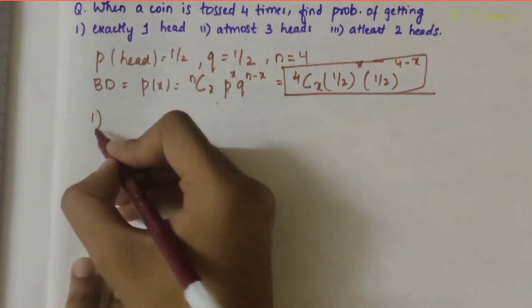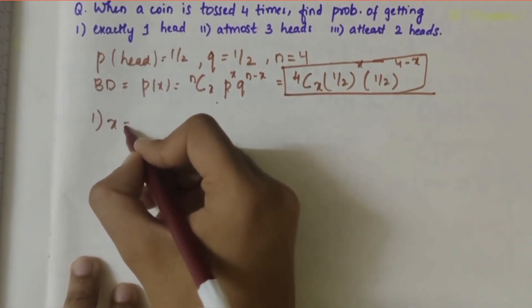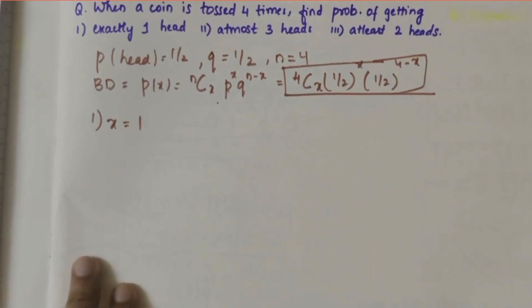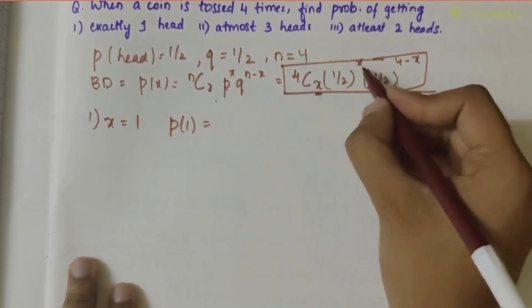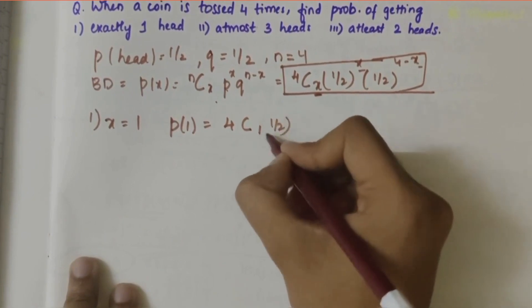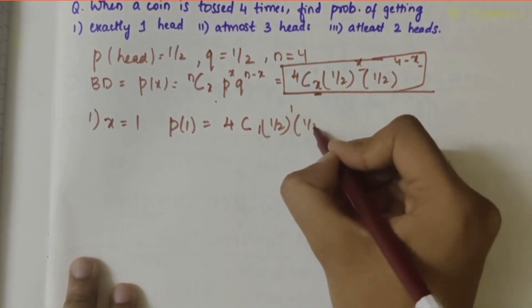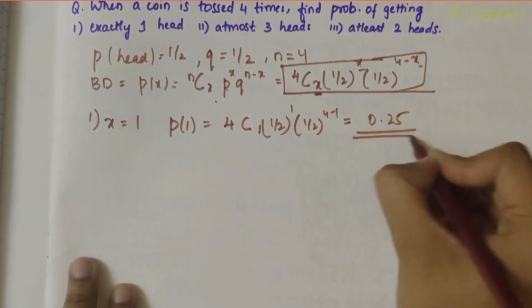For the first subpart, exactly one head means x equals 1. When x equals 1, we substitute it into the equation: 4C1 × (1/2)^1 × (1/2)^(4-1). If you solve this, you get 0.25.